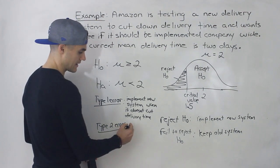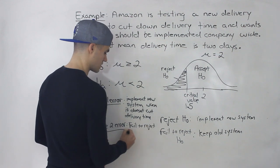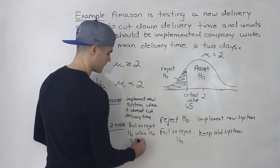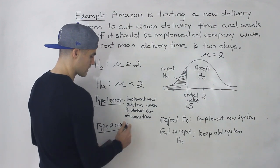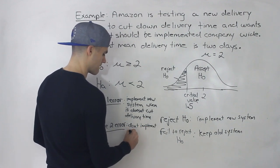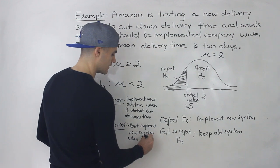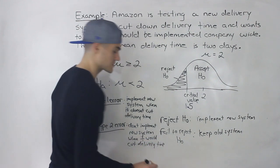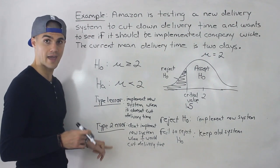Type 2 error is when we fail to reject the null when the null is actually false. In this specific scenario, that means we don't implement the new system when it actually would cut down delivery time. Sometimes you'll see questions where they give you a specific scenario and you have to put it into words — describing what a type 1 and type 2 error would mean in that context.